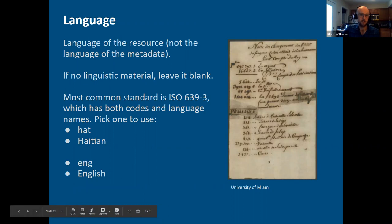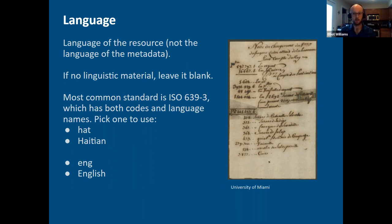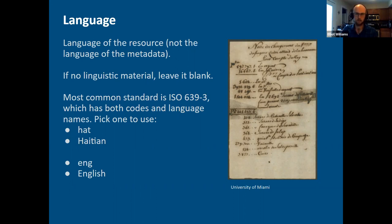The language field is pretty straightforward — it's the language of the resource itself, not the language of the metadata. Only use this field for materials that have linguistic content — a photograph typically doesn't have a language field, though it can get tricky, like a photograph with something written on the back. Generally, only apply the language field to resources with a strong linguistic component. The most common standard is ISO 639-3, which gives both three-letter codes and names for languages. You can use either the code or the language name — there are arguments for both — but be consistent.